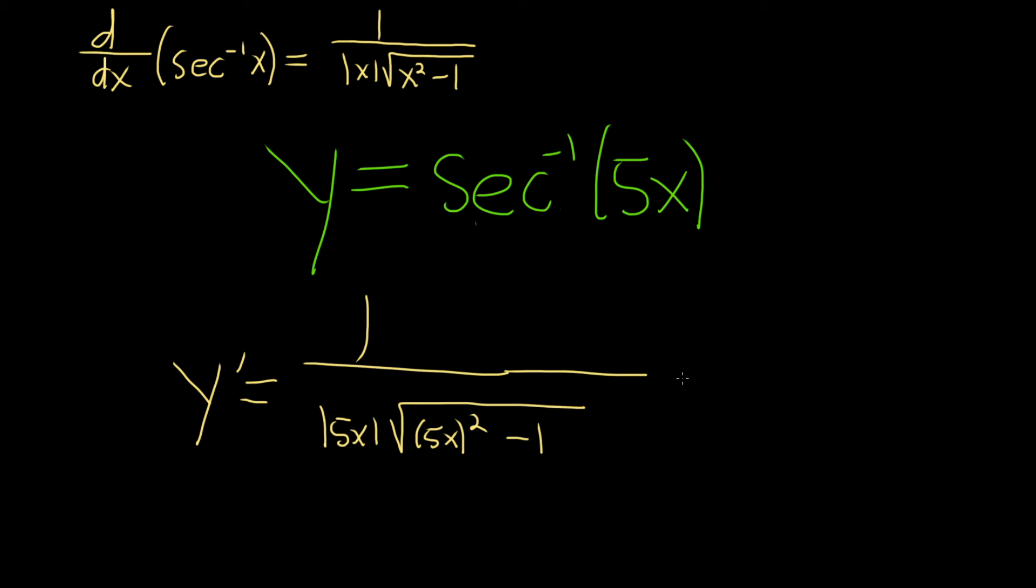minus 1, and then times the derivative of our inside function, which is 5x. And the derivative of 5x is simply 5.